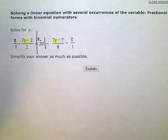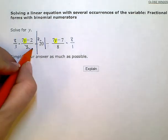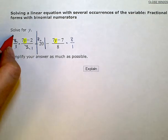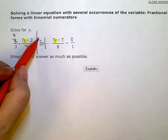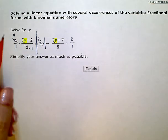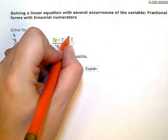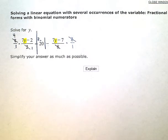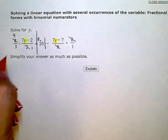Now, I'm going to go ahead and simplify. 2 will go into itself once and into 8 4 times. 8 times 20 here will give me 160. And over here, 8 will cancel with itself.